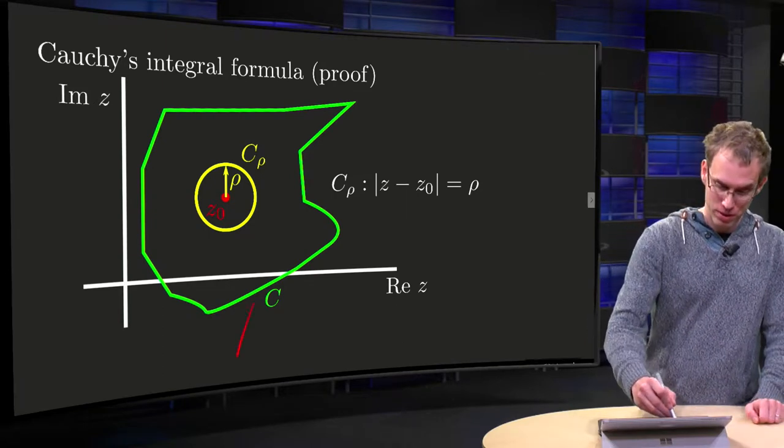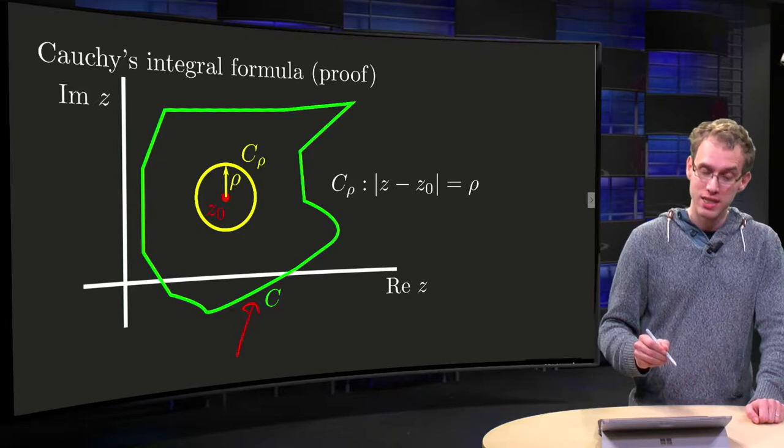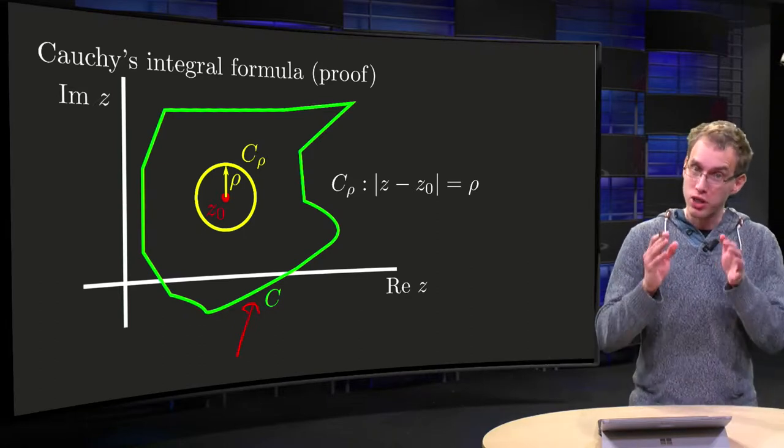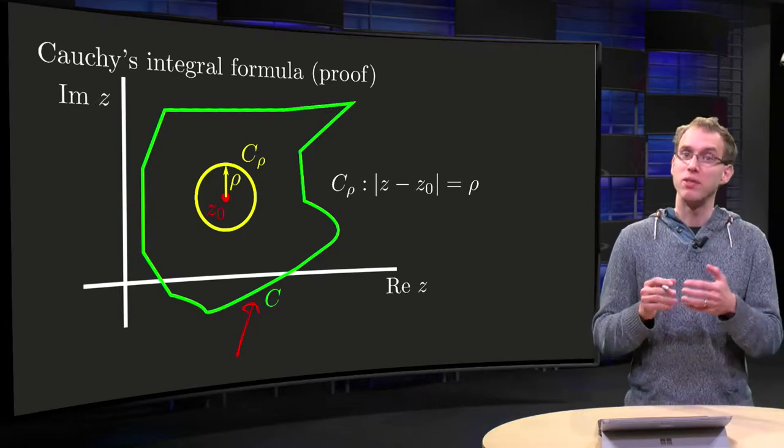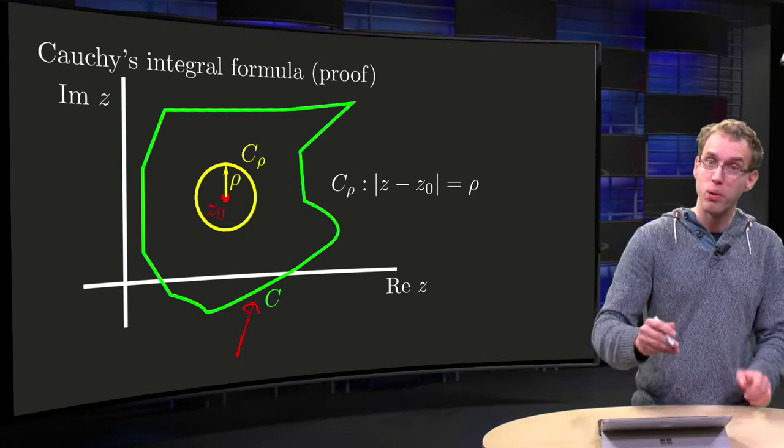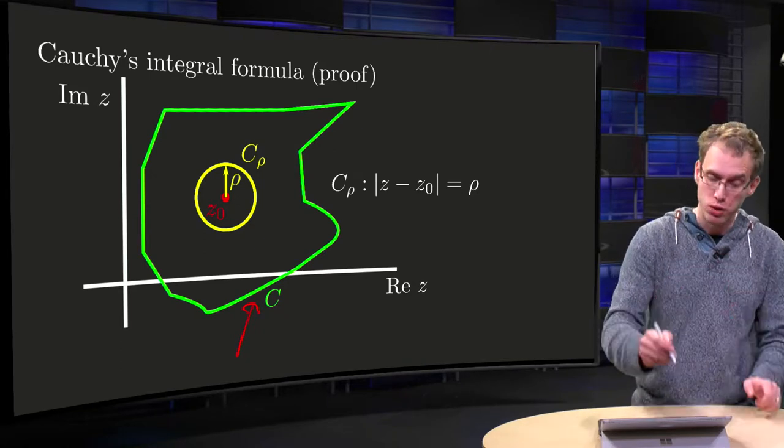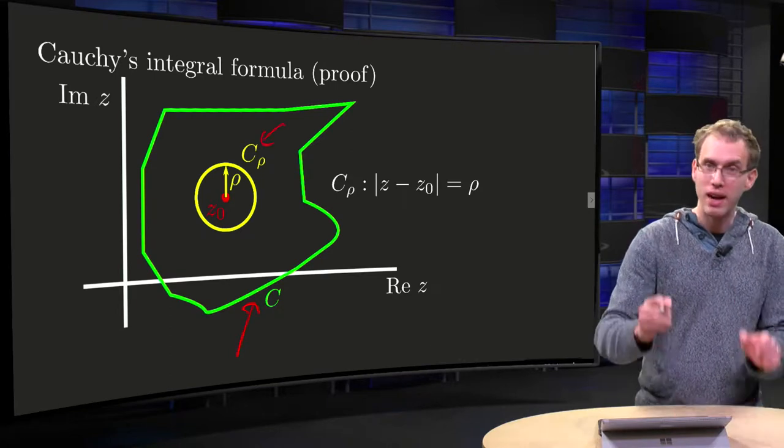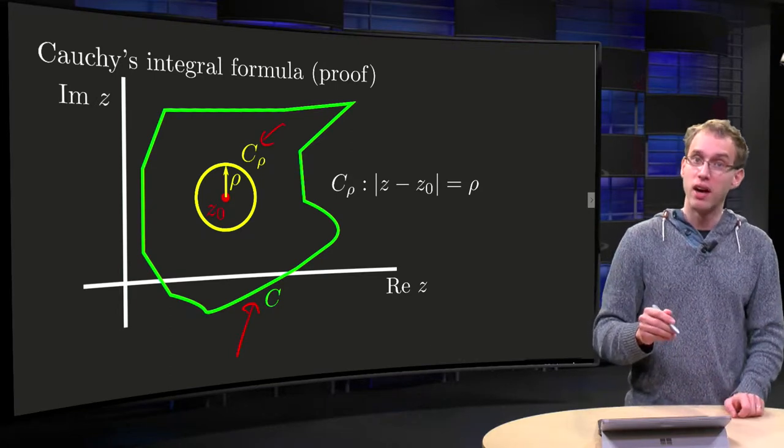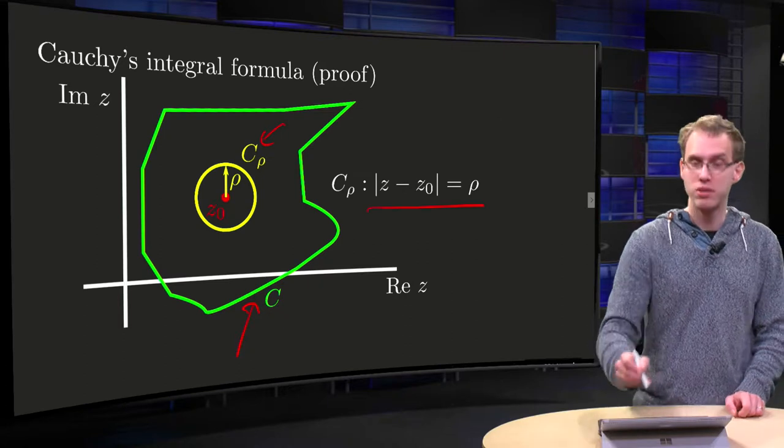So what do we do? We have some simple closed contour C, we have our z0 inside C, and now we define C rho, where rho is arbitrary and small, zero inside C, the circle around z0.